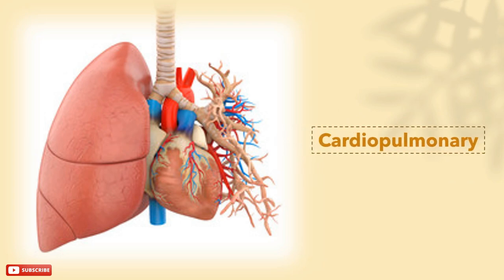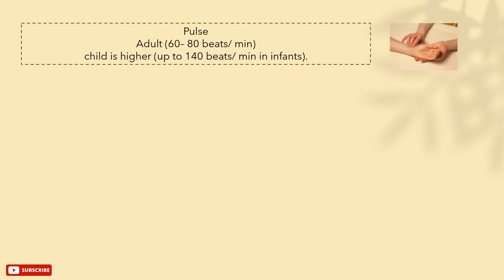Cardiopulmonary system. Firstly, we measure the pulse. The adult pulse ranges from 60 to 80 beats per minute, and it is usually a lot higher in kids and infants. To measure it, you place three fingers over the radial artery of the patient, count the pulse, and at the same time recognize its characteristics.